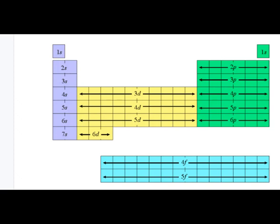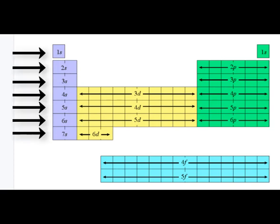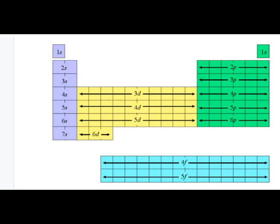Let's focus on the principal quantum number and how it's directly related to the periods in the periodic table, periods one through seven. Notice there is an offset in the D region and in the F. All of the principal quantum numbers for the D are offset by one, and the principal quantum numbers for the F are offset by two.